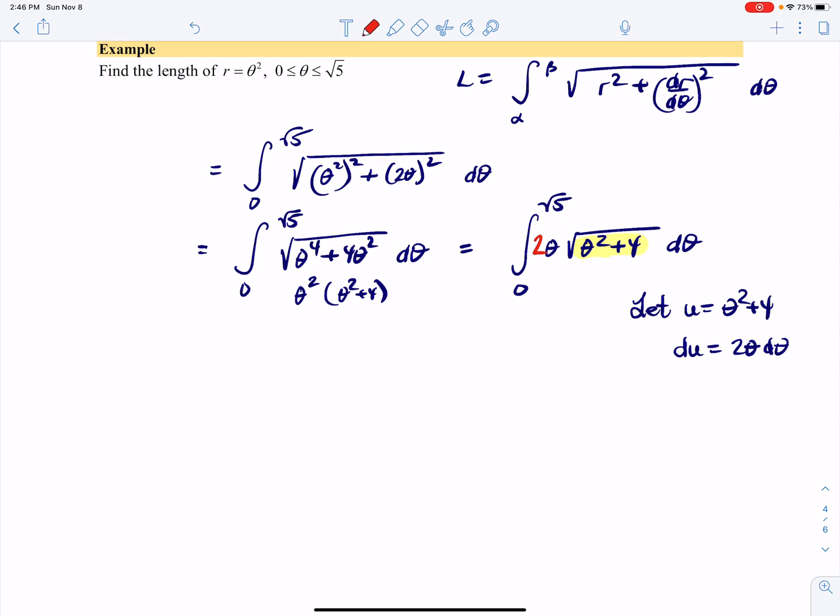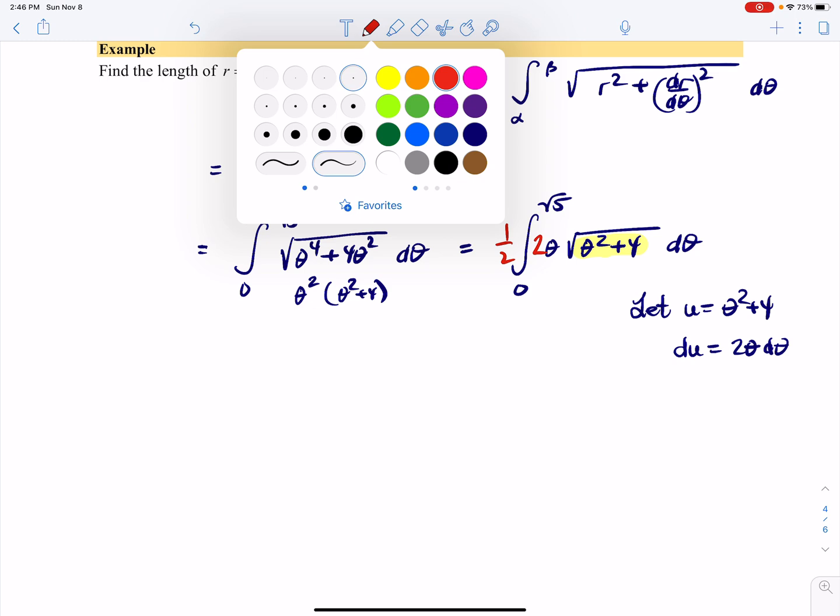So I'm going to multiply by 2 to make the substitution work nicely, but then multiply by 1/2 to balance it out. I basically multiply by one—I just put the numbers where they need to go.